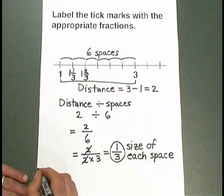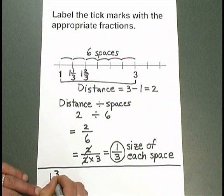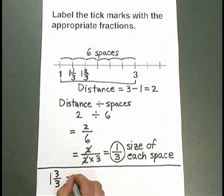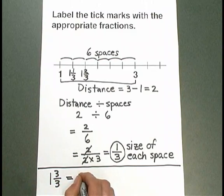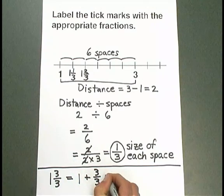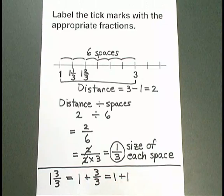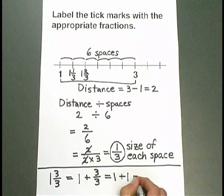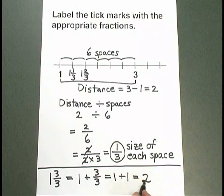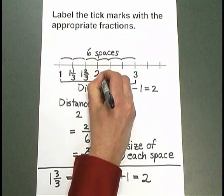Now let's think about 1 and 3 thirds. 1 and 3 thirds can be written in a simpler way. That's equal to 1 plus 3 thirds, which is equal to 1 plus—3 thirds is the same as one whole. So we have just 1 plus 1. 1 plus 1 is 2. The 2 here is equal to 1 and 3 thirds. So I'm going to label this next tick mark with 2.